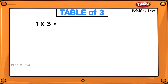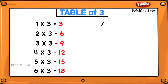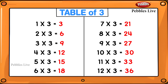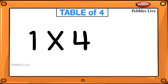1 three is 3, 2 threes are 6, 3 threes are 9, 4 threes are 12, 9 threes are 27, 10 threes are 30, 11 threes are 33, 12 threes are 36. Table of 4: 1 four is 4.